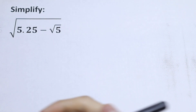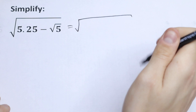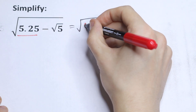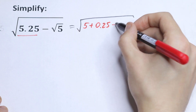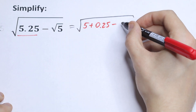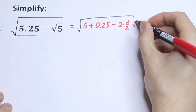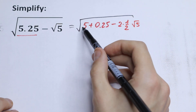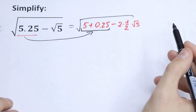I want to suggest a little trick right here. So let's write this square root, and inside the square root sign, let's write this 5.25 as 5 plus 0.25. The next trick is to write near this square root of 5 the product: 2 times one-half times square root of 5. This equals 1, so nothing changes.